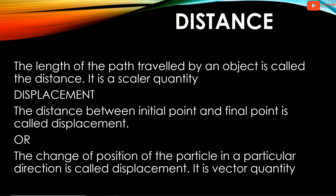Displacement: the distance between the initial point and final point is called displacement. Or, the change of position of the particle in a particular direction is called displacement. The shortest distance between the initial position and final position is the displacement. It is a vector quantity.